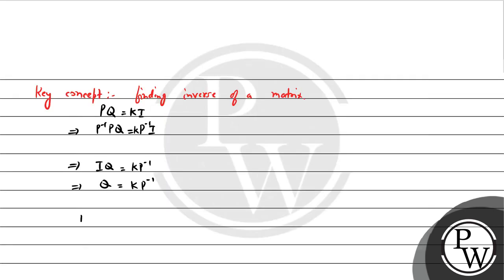First let us write down matrix P, which is given to us: first row 3, -1, -2; second row 2, 0, alpha; third row 3, -5, 0.